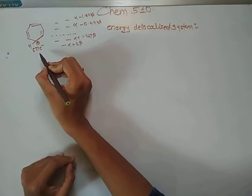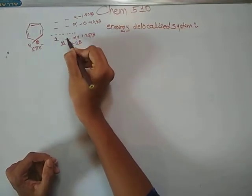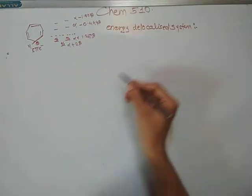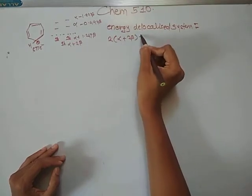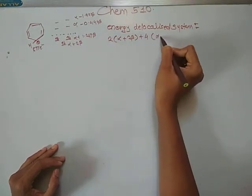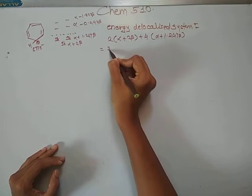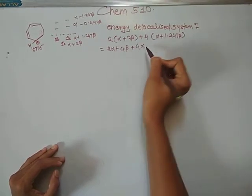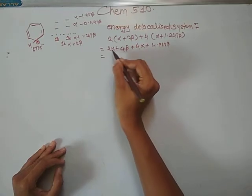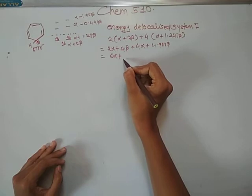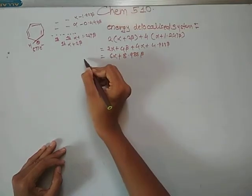In this cycloheptatrienyl cation, there are six pi electrons. Filling of pi electrons: one, two, three, four, five, six. So the energy of the delocalized system is equal to 2(alpha + 2 beta) + 4(alpha + 1.247 beta), giving 2 alpha + 4 beta + 4 alpha + 4.988 beta, which equals 6 alpha + 8.988 beta.